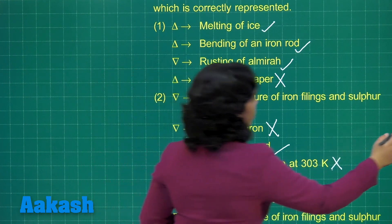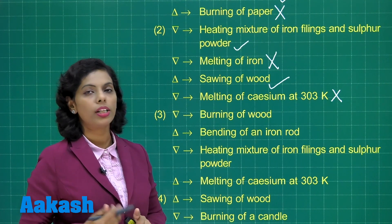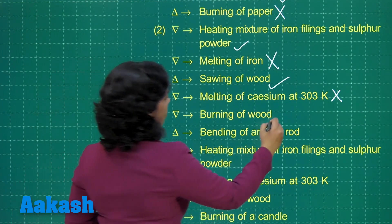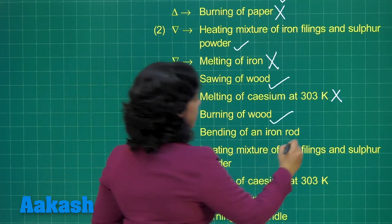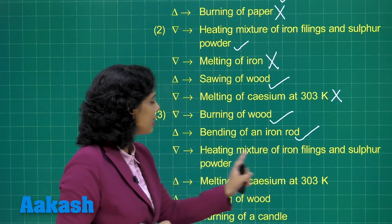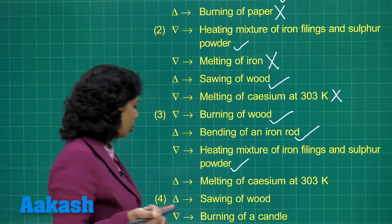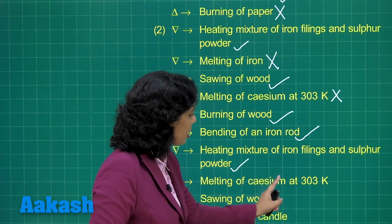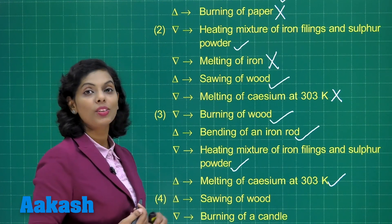Now option 3: burning of wood is a chemical change — carbon dioxide and water are formed, a new substance is produced. Correct. Bending of an iron rod is a physical change. Correct. Heating a mixture of iron filings and sulfur powder is a chemical change — ferrous sulfide is formed. Correct. Delta representing physical change for melting of cesium at 303 K is also correct. It means we found our correct option.